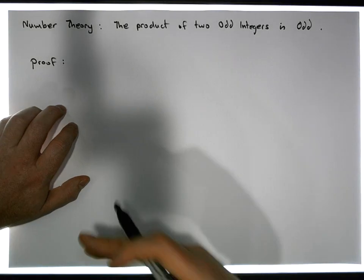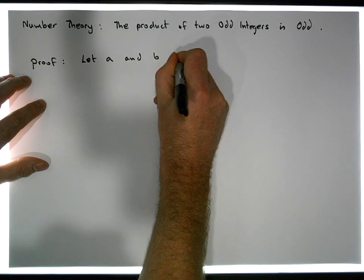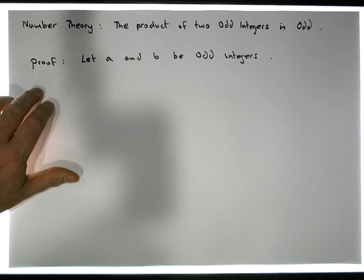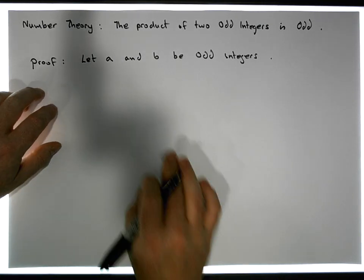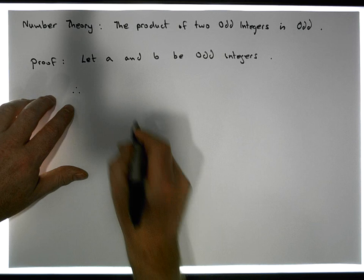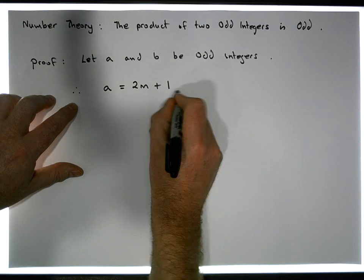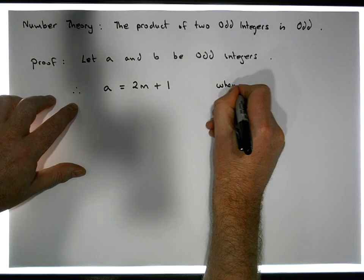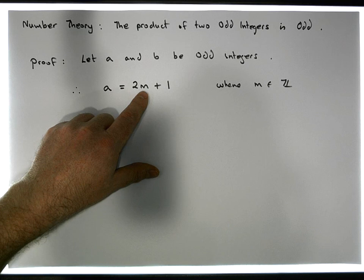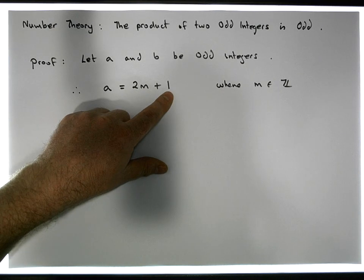To show that the product of two odd integers is odd, we need two odd integers in the first place. So let a and b be odd integers. Because they're odd, the remainder after division by two equals one. From the division algorithm, we know that a must equal two times some integer n plus one, because that's what an odd integer looks like — a quotient times the divisor plus a remainder.